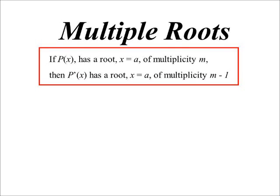Now, what happens is this. If a polynomial has a root at x equals a of multiplicity m, where m is bigger than 1, so whether it be a double root, triple root, or what have you, then what will happen is its derivative will also have a root, but its multiplicity will just be one less.